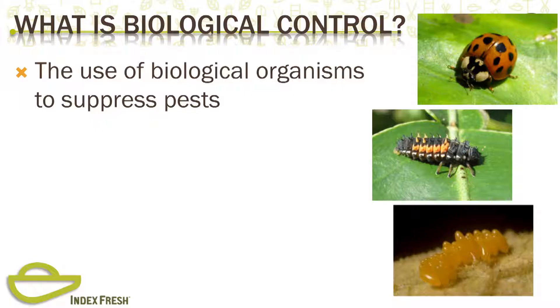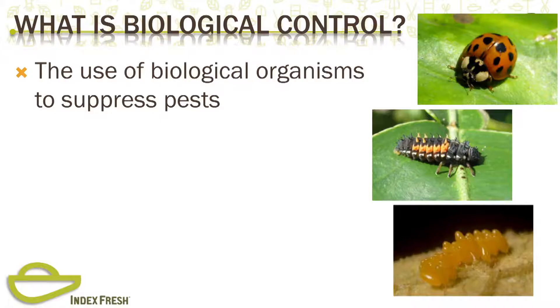One of the most commonly recognized beneficial insects is the common ladybug — this one is Harmonia. Here's the adult and here is the larva, which has a racing stripe down the back that identifies it. A lot of people don't recognize the immature form and have told me they crush them thinking they're eating their plants. Down at the bottom are the eggs of the ladybug, usually laid near the pests they attack — mostly aphids, mealybugs, and other insects that produce honeydew.